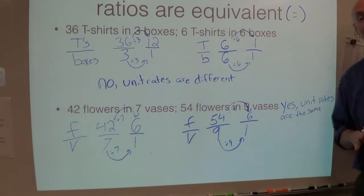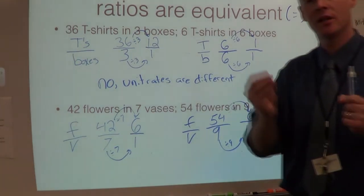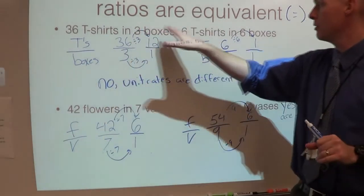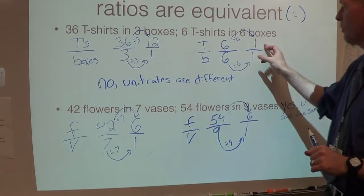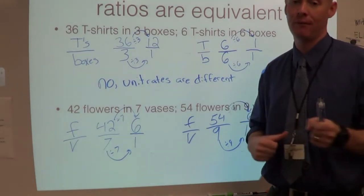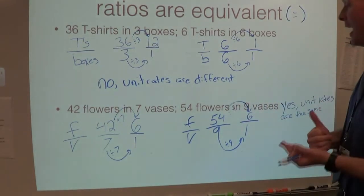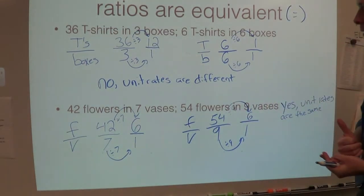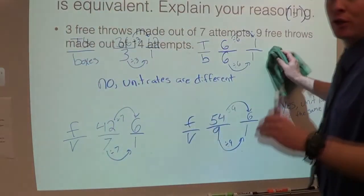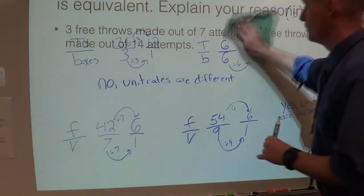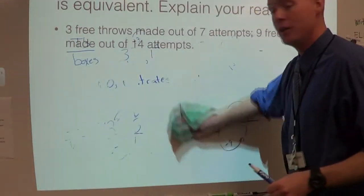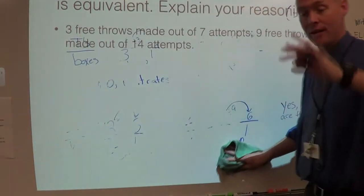So just to summarize: to use unit rates to compare ratios, you take the two separate ratios and you find the unit rates. If the unit rates are the same, they're equivalent. If they're different, then they're not equivalent. Let's move on. Sometimes unit rates are difficult to find, so I'm going to teach you another skill — you can use equivalent fractions to see if they're equal.